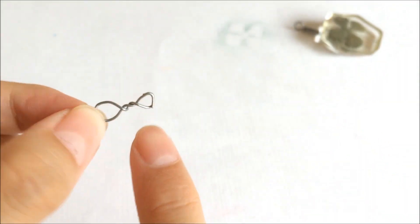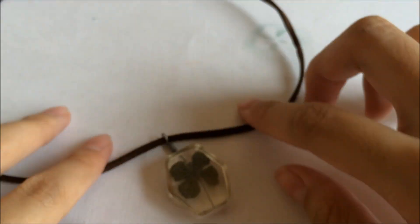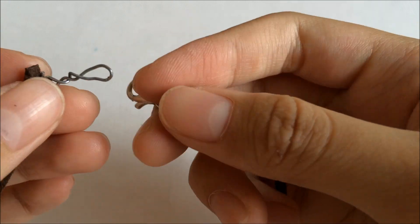Also, you'll need jump rings, but I'm using this wire that I coil myself. Just tie it at the bottom part and there you go, you are done with the clover leaf necklace.